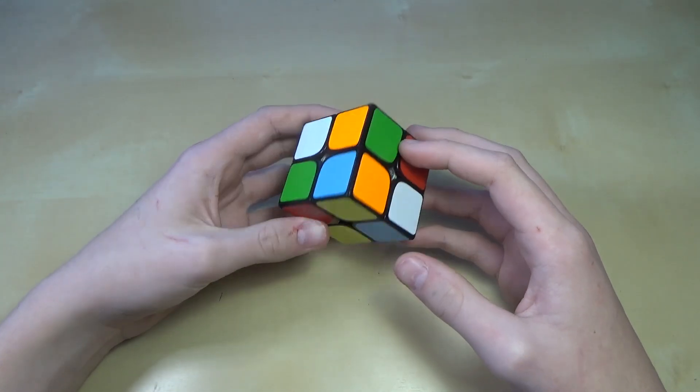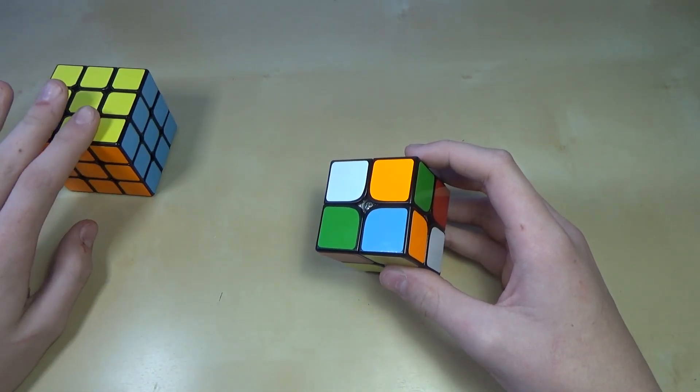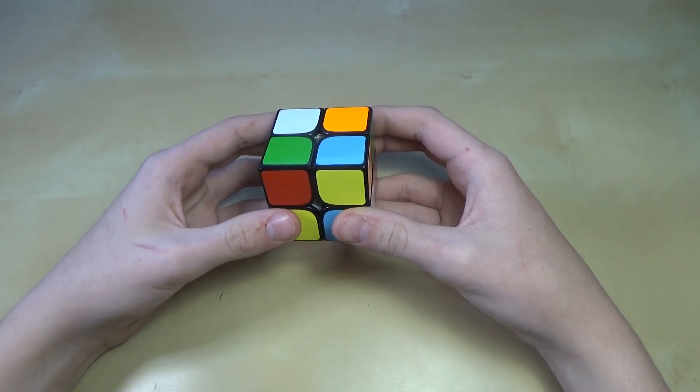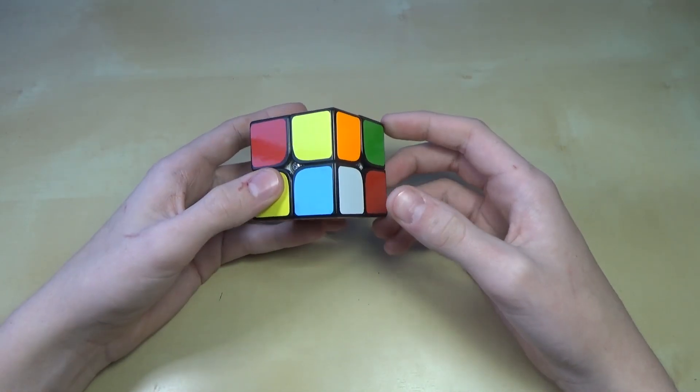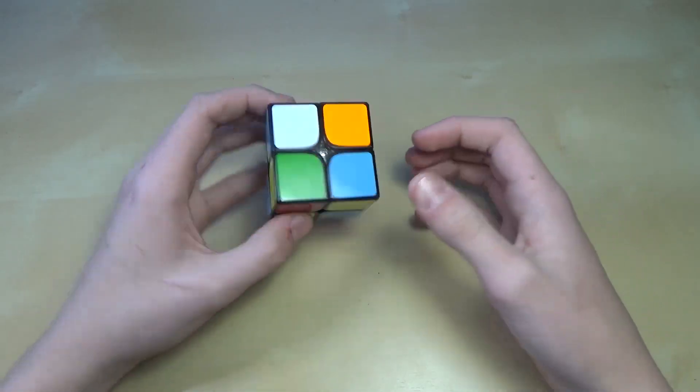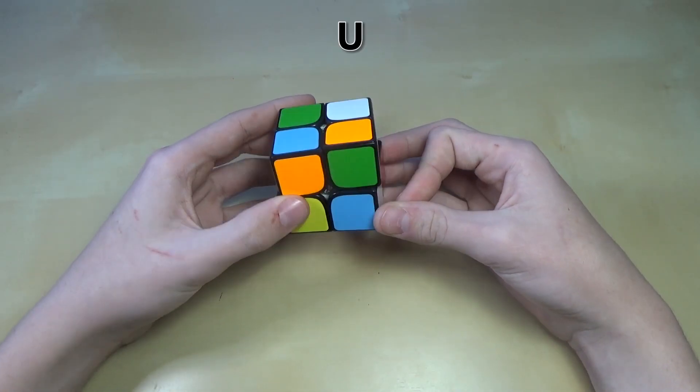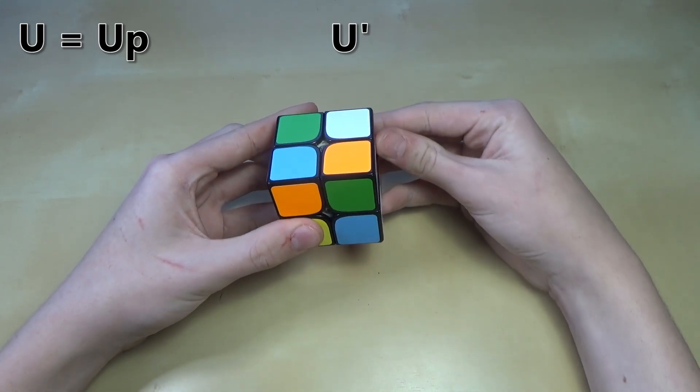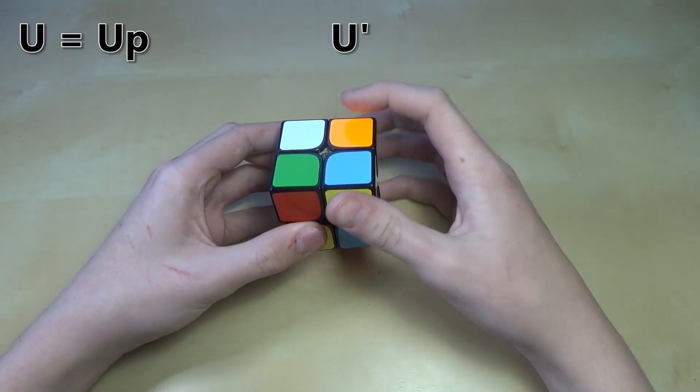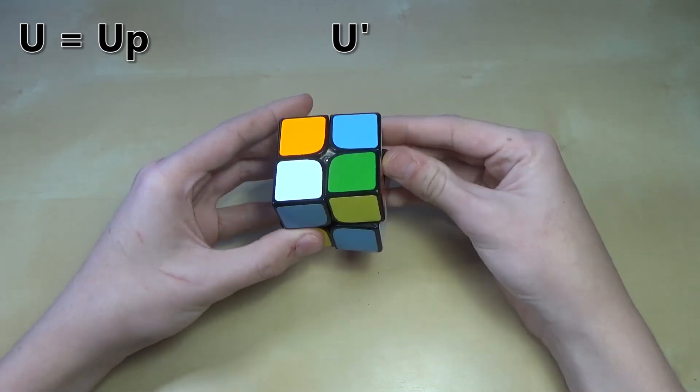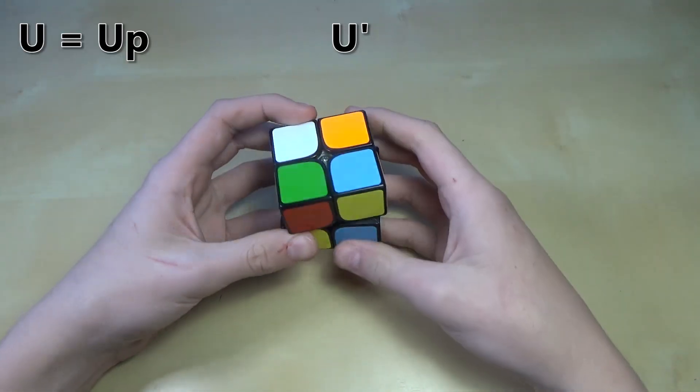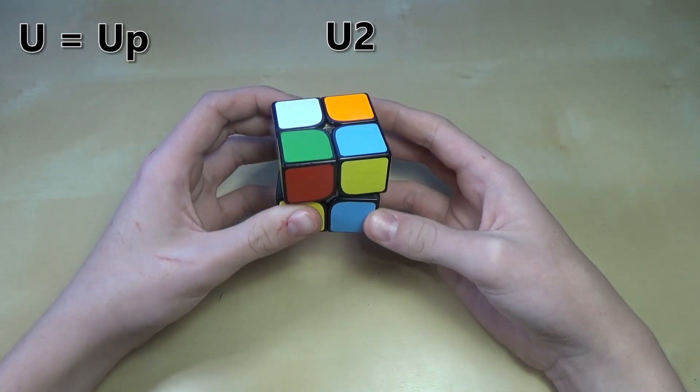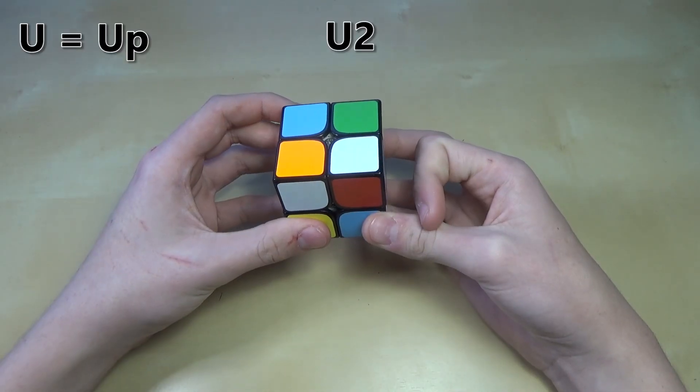So the first thing you'll need to know is of course notation. So you would have learned this on the 3x3, but if you don't know it real quick, I'm just going to show you. Notation is basically how you do moves on a cube. A U move would be like this, turning the U or up layer clockwise. This would be U prime, turning the U up layer counterclockwise. Prime means counterclockwise, no prime means clockwise. And then 2 means turn that layer twice. So U2 would be like this.